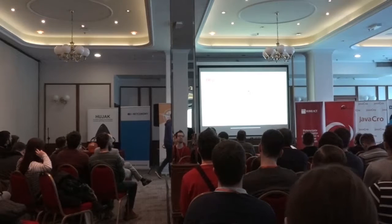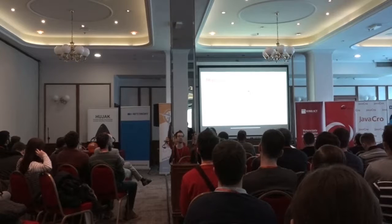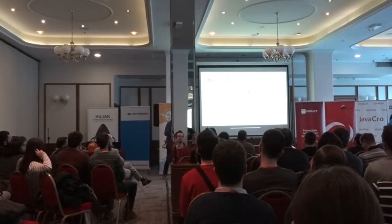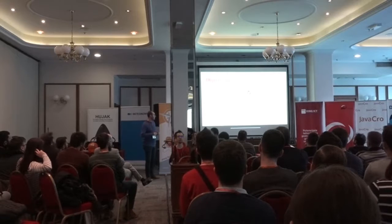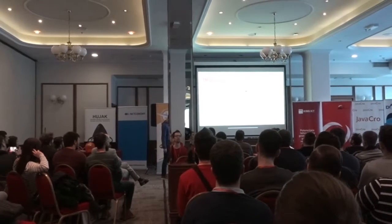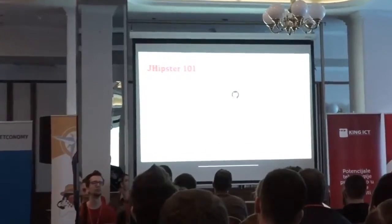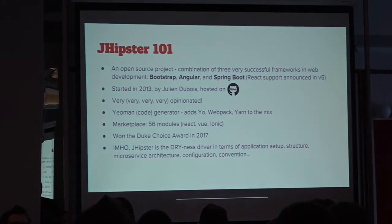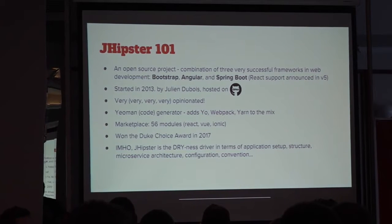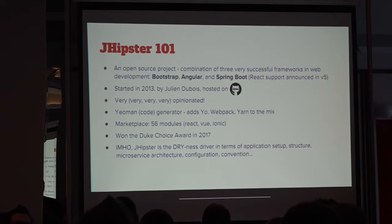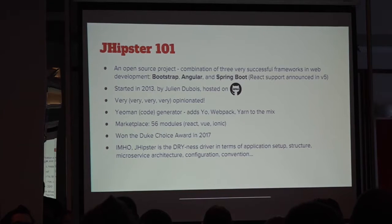JHipster is an open source library started back in 2013 by Julien Dubois, and it's hosted on GitHub. It's a combination of three very successful web frameworks — Bootstrap, Angular, and Spring Boot — but it's very opinionated. It's built on top of the Yeoman code generator and it uses Webpack and Yarn. The JHipster community is very vital and very active. The community has built around 60 additional modules, which include support for React, Vue, or even Ionic, so you do not need to use only Angular. React support is officially announced starting from version 5 of JHipster.